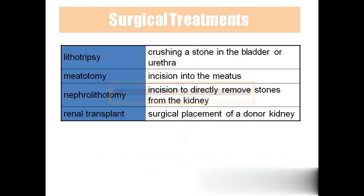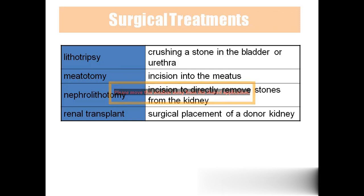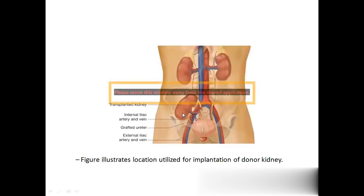Lithotripsy is the surgical crushing of stones in the bladder or urethra. Meatotomy: 'meato' means opening, so meatotomy means cutting the opening. Nephrolithotomy: the kidney is cut in order to remove stones. Renal transplant: when a person has kidney failure, they are managed with dialysis until a donor kidney is found and then the damaged kidney is replaced with the donor kidney.